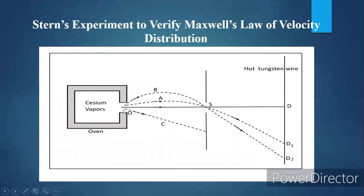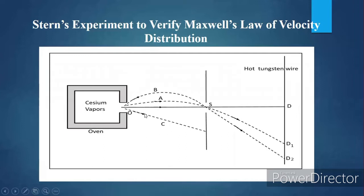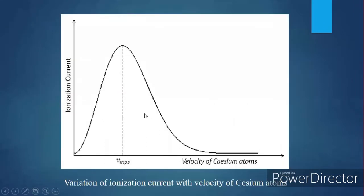Different curved paths are traced by the atoms. These parabolic projectile paths represent the velocity, and that concept is used to verify Maxwell's law of distribution of velocities. The graph of velocity of cesium atoms versus ionization current will be traced, and it represents exactly the same graph as Maxwell's law of distribution of velocities.